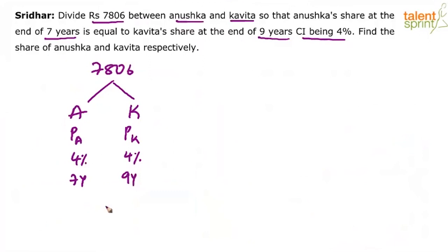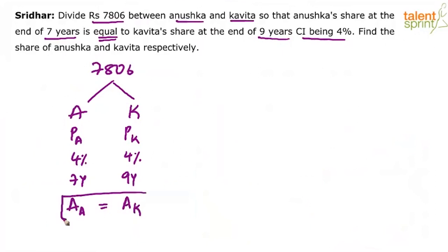The question says that Anushka's share at the end of seven years is equal to Kavita's share at the end of nine years, which means the total amount that Anushka gets is equal to the total amount that Kavita gets. This is the key — their amounts are equal.